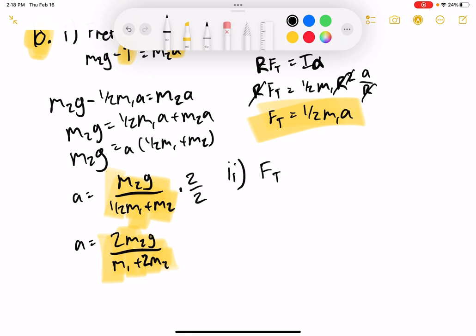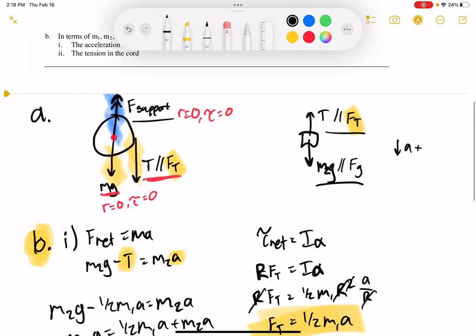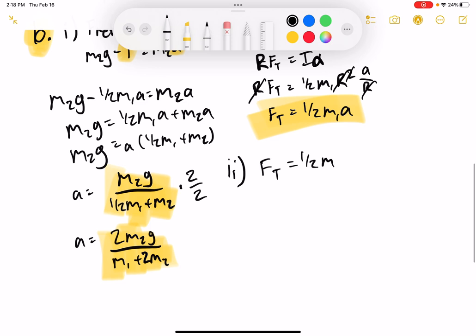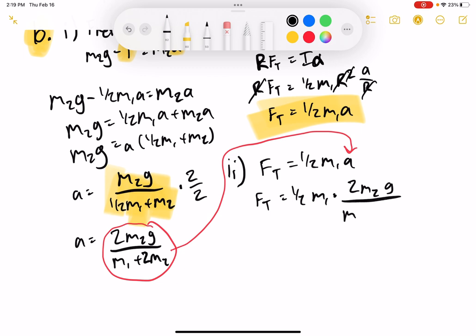So, now I want to know what the force of the tension is. Since that's what part ii says, tension in the chord. So, one-half M1 A. But now, I can actually go ahead and plug in this A that I found. So, I'm going to take this, and I'm going to plug that in here. And so, I have force of tension equals one-half M1 times 2M2 G over M1 plus 2M2.